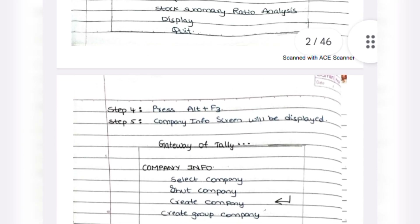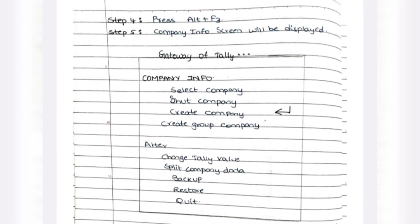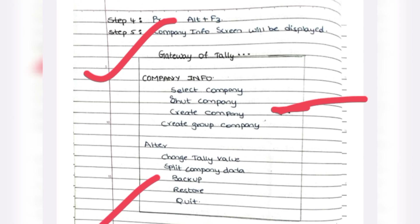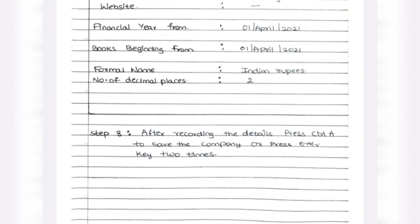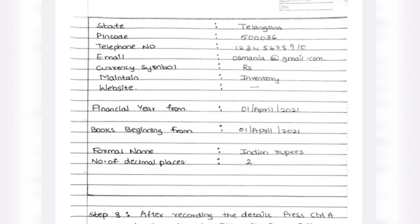After drawing the screen, step number 4: press Alt plus F3. Then we need to create a company. The screen will be displayed. We should select Create Company. We will get an option, and the screen will show: Directory, name of the company, mailing address of the company, state, PIN code, telephone number, email ID — the basic details.